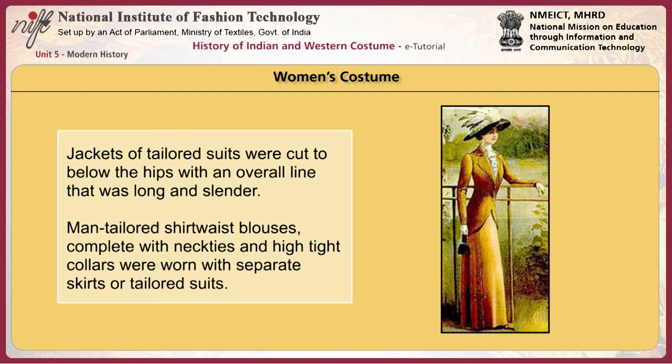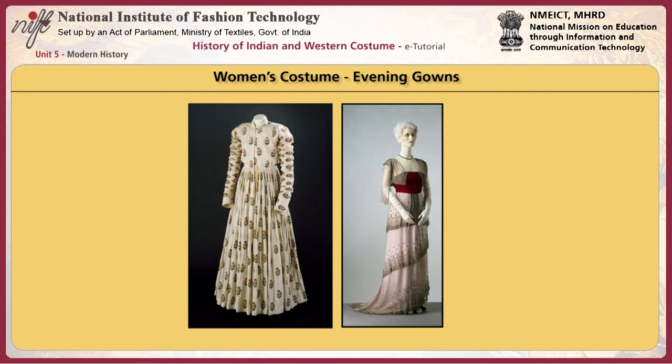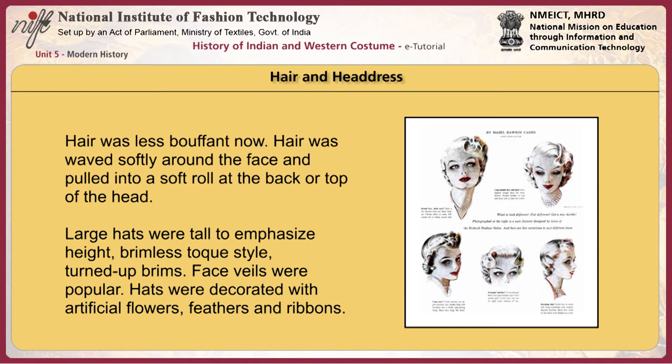Jackets of tailored suits were cut to below the hips with an overall line that was long and slender. Man-tailored shirtwaist blouses complete with neckties and high tight collars were worn with separate skirts or tailored suits. For evenings, both empire revival and Oriental influences were evident. Evening dresses had tunics of layers of sheer fabric placed over heavier fabric. Trains were popular. Sleeves were short, often kimono style and of sheer fabric.